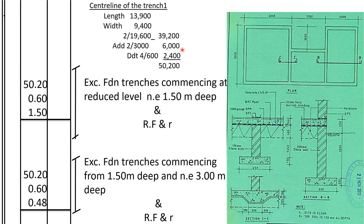After getting the total external perimeter, we shall deduct the number of corners times the thickness of the wall. The number of corners is the number of external corners minus the number of internal corners, just as we discussed in the previous video. It was 6 external corners, deduct 2 internal corners — so 4 corners times the thickness of the trench, which is 600, giving a total of 2,400.